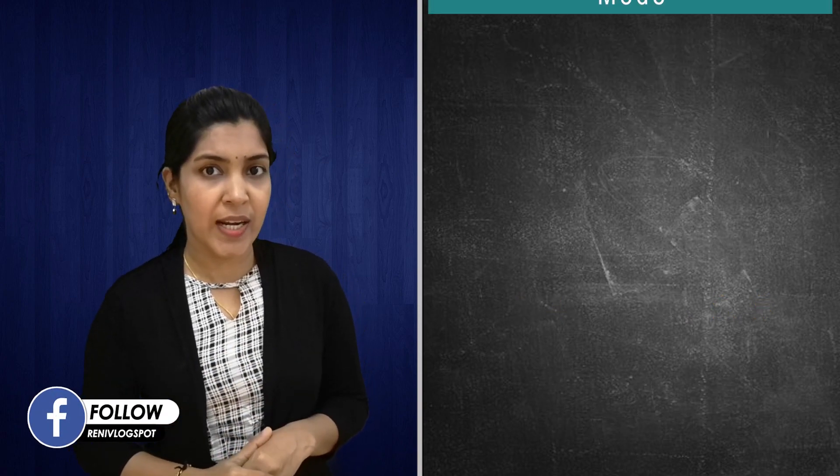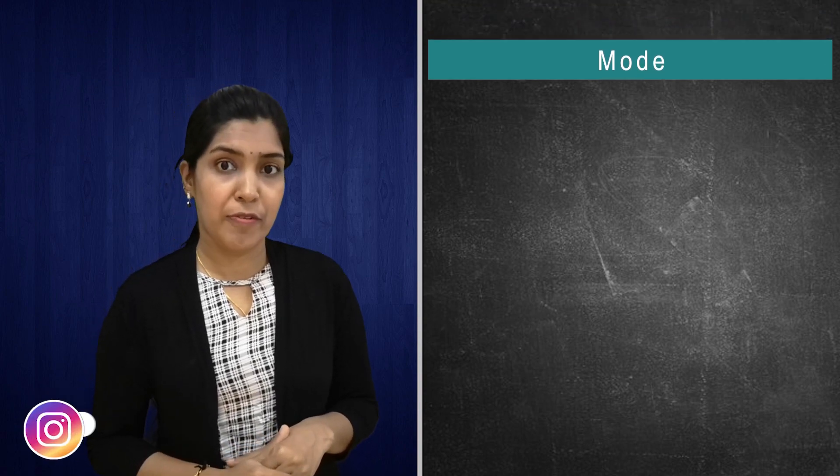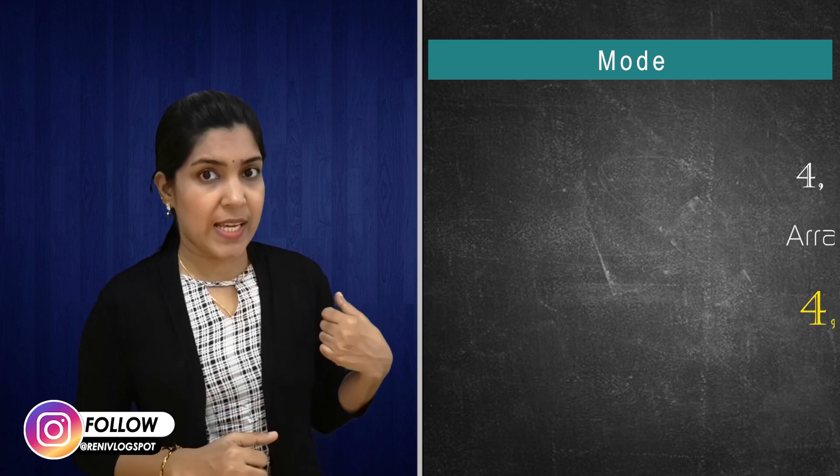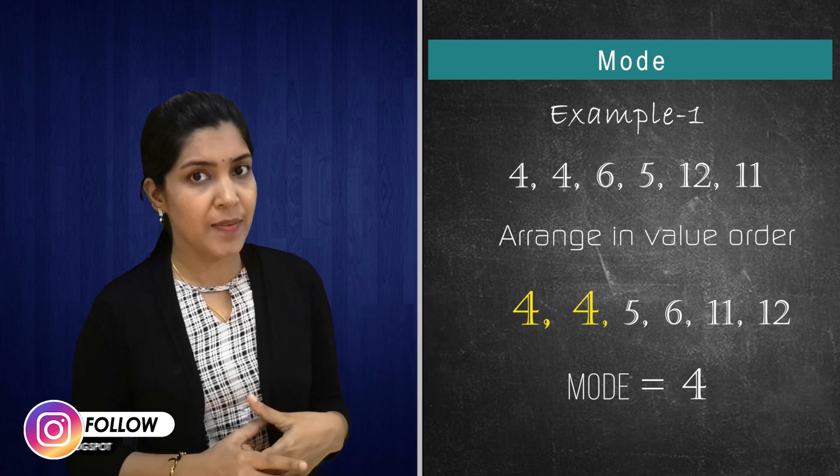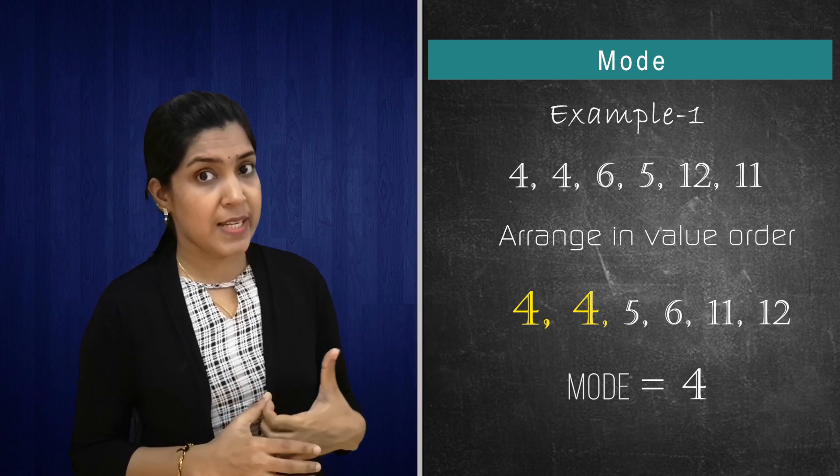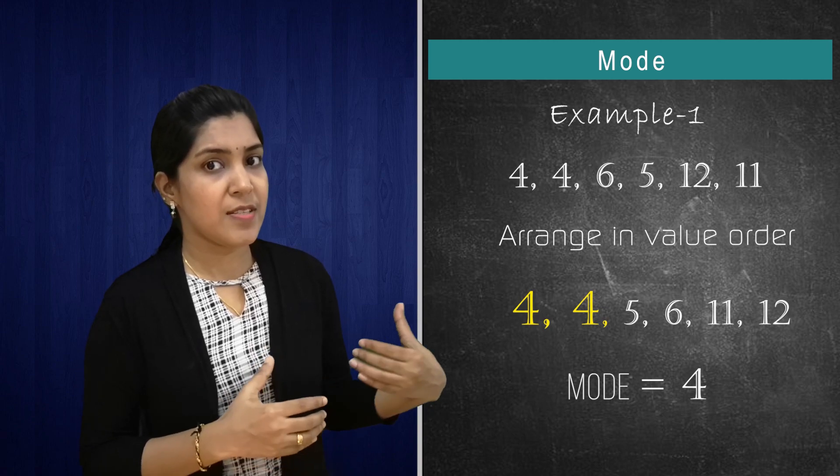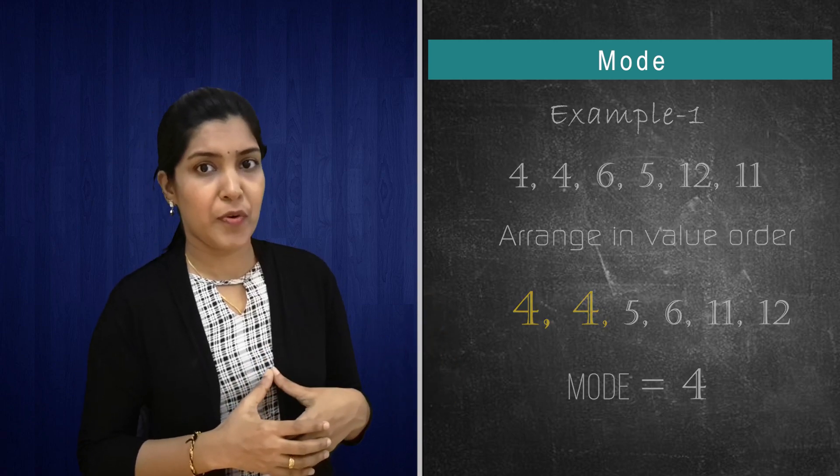Then we will go for the third one. Mode. Mode. Most often used number. So here we have a series of numbers. So here which number is repeated most. Yes, it's four. So the mode of the given set of data is four.